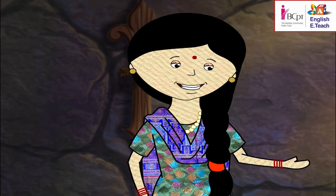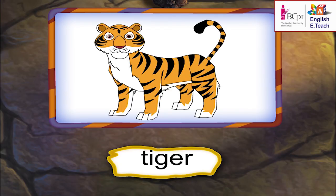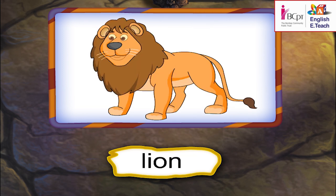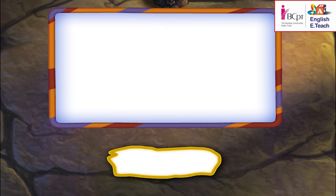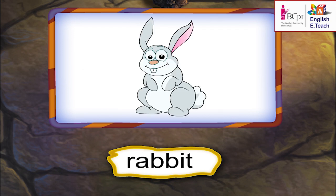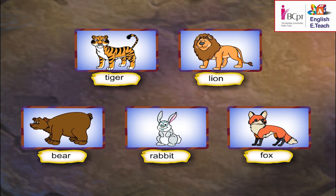Animals — now name some animals. Tiger. Lion. Bear. Rabbit. Fox. Now make chits for each of these animals and play the game again with animal names.